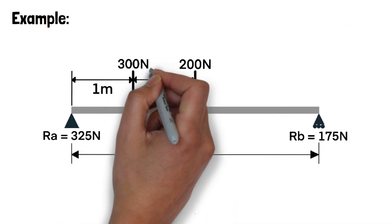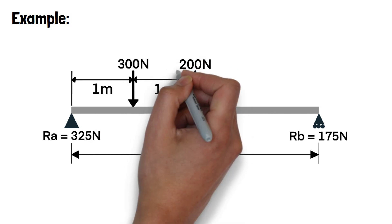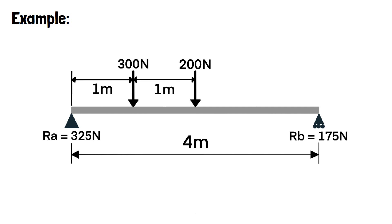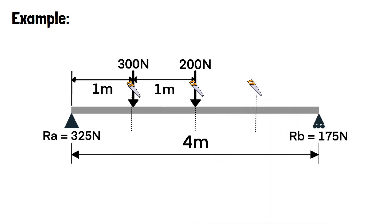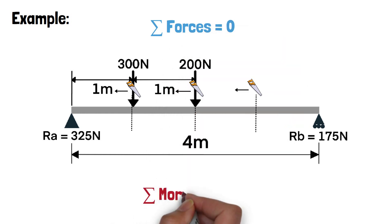The beam has a first 300 newton point load applied 1 metre from the left and a second 200 newton point load applied 2 metres from the left. In order to draw our diagrams we must make imaginary cuts along the beam where we are going to determine our shear force and bending moments. In both instances we will take into consideration the forces to the left of the cuts. It must be noted that as our beam is in equilibrium the total forces acting on the beam are zero and the total moments are also zero.